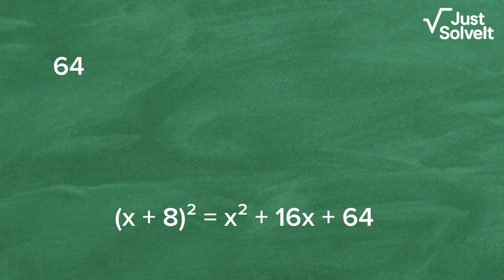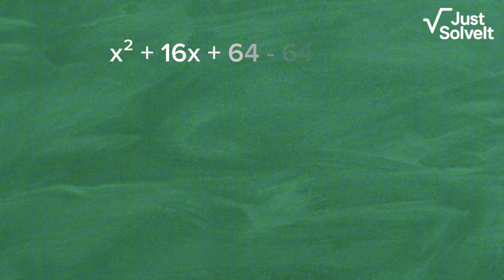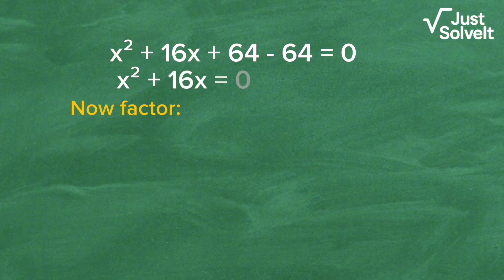Substitute into the equation: x squared plus 16x plus 64 equals 64. Move 64 to the left side. x squared plus 16x plus 64 minus 64 equals 0, which gives x squared plus 16x equals 0.